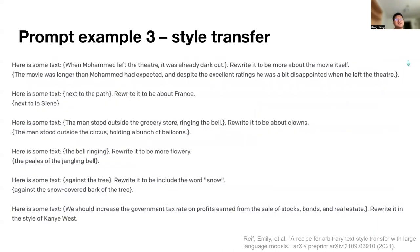The third example we want to show is style transfer. Before we give the model what we wanted to convert in style, we give it a few short examples. For instance, here is some text about France, and then rewrite it to be more flowery — 'the bell rings' becomes 'the pairs of the jangling bell.' We showed a few examples of following the instruction to convert to a certain style.